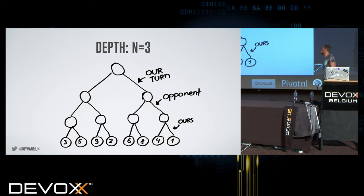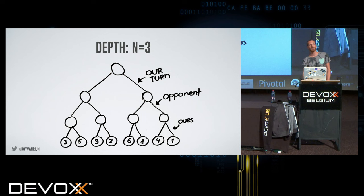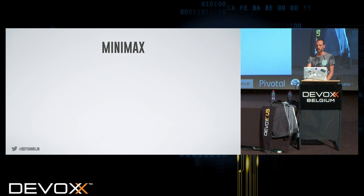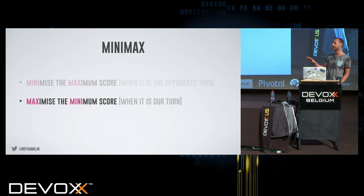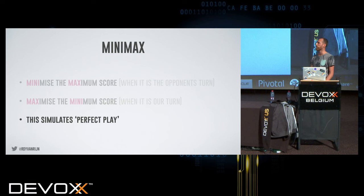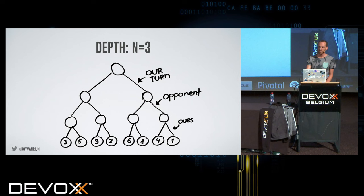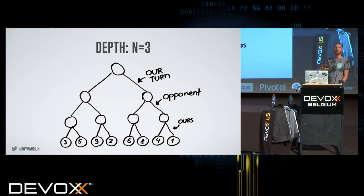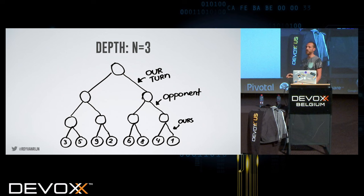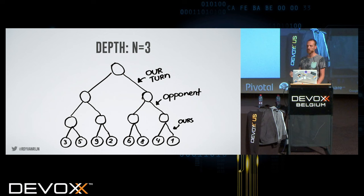We start again. Do we go left or right? Suddenly it isn't trivial anymore. You can say, well, let's go towards the 9. But yeah, there's also a 2 there. So how would you solve this? It turns out there's a very simple algorithm called Minimax. In Minimax, you try to minimize the maximum score if it's the opponent's turn, and maximize the minimum score when it's our turn. This is basically perfect play. Both players know the outcome — there's a 3, 5, 9, 2, 6, 8, 4, and 1. There's perfect information.